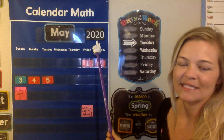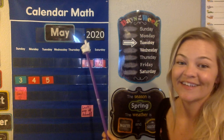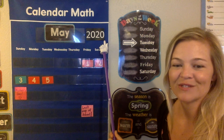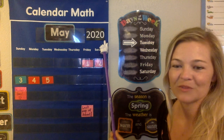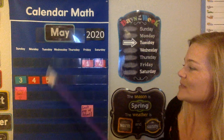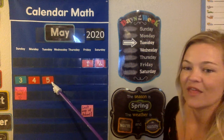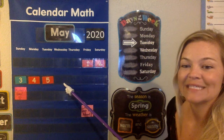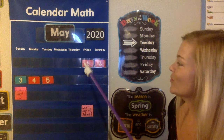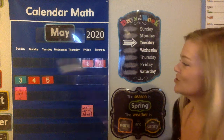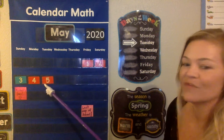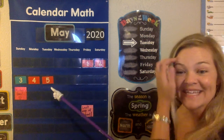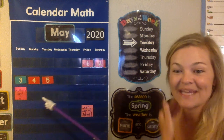Now let's point to the year. What year is it? 2020. Yesterday was May 5th. So what comes after 5? What would today's date be? 1, 2, 3, 4, 5, 6. So today is May 6th.